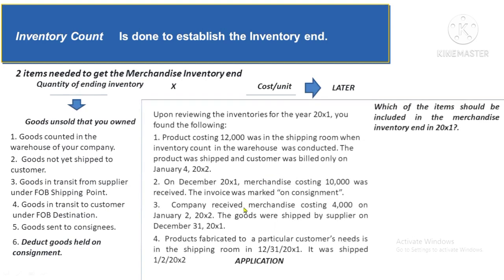Let's assess whether items 1 to 4 should be included in the inventory quantity at year-end 20x1. Item 1: a product costing $12,000 was in the shipping room during the warehouse count and was only shipped and billed to the customer on January 4, 20x2. Answer: Yes, it should be included — it is still in the company's property at year-end.